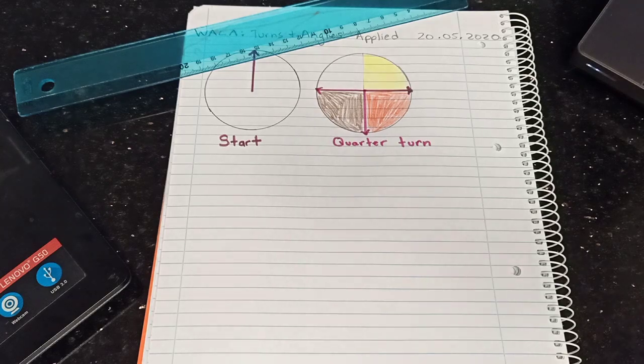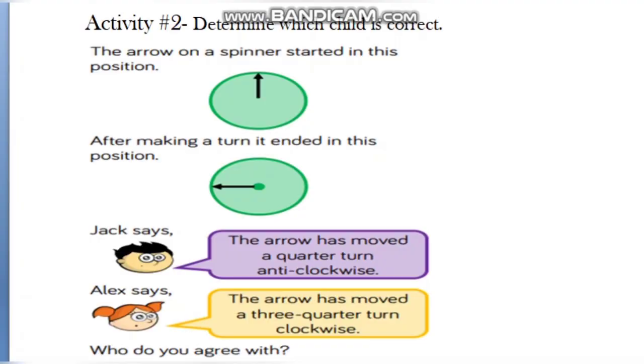Okay activity two, we have to determine which child is correct, is it going to be Jack or Alex. First we're looking at the arrow on a spinner that started in this position at the 12 o'clock position and after making a turn it ended in this position at the nine o'clock position. Jack says the arrow has moved a quarter turn anti-clockwise and Alex says the arrow has moved a three quarter turn clockwise. Who do you agree with?